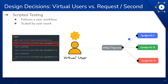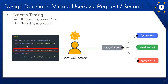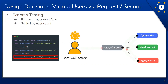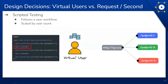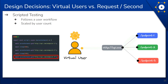Scripted tests, on the other hand, test an API as part of a defined workflow. A virtual user performs some scripted operations — for example, it may make requests to log in, fetch user data, make some database changes, and finally log out. These requests can have pauses in between or be made simultaneously — whatever most accurately represents how a user will interact with the API. The test load is then scaled by adjusting the number of concurrent virtual users.